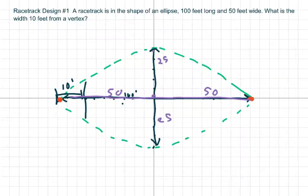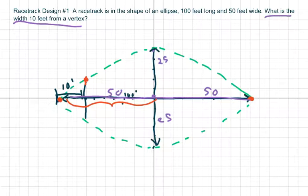Alright, so what they want is the width 10 feet from the vertex. So if this whole length is 50, then this point here, let's just say it's positive because I don't want to deal with the negative. So this is going to be 40 because I'm going to subtract 50 minus 10. That's going to be 40.